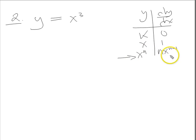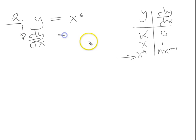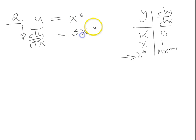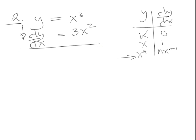The power comes down, it's 1 less, so let's apply that rule. Differentiating on the left, we write dy/dx equals the power comes down to ground level: x to 1 less than 3, which is 2. That's that one done. Let's move on to the next one.